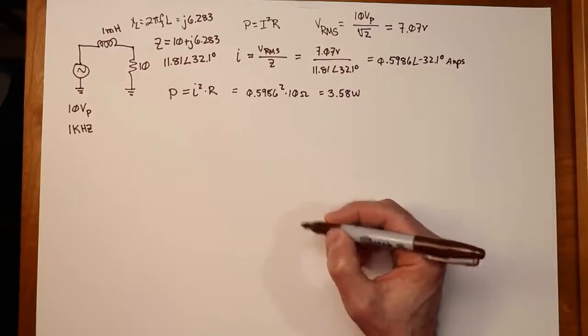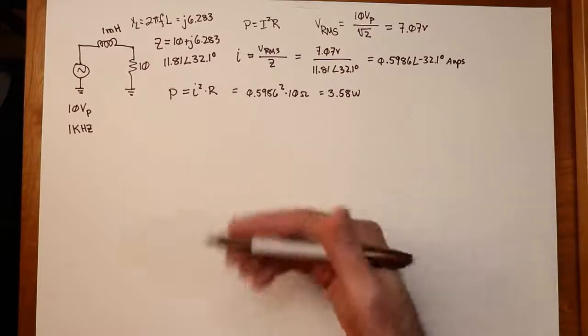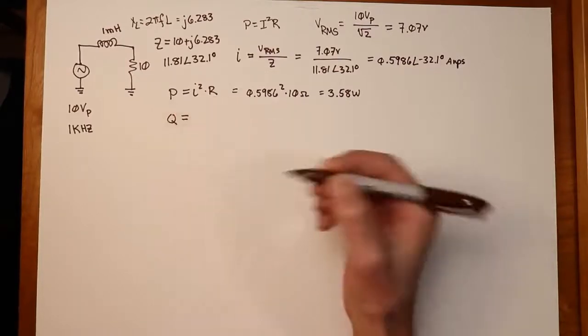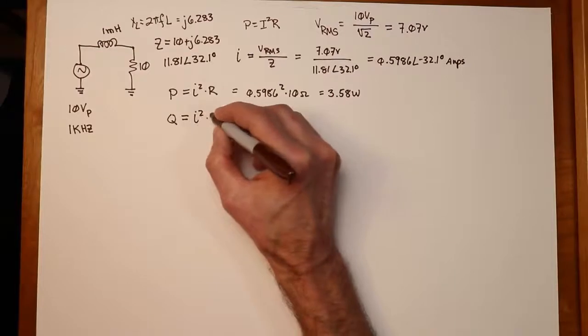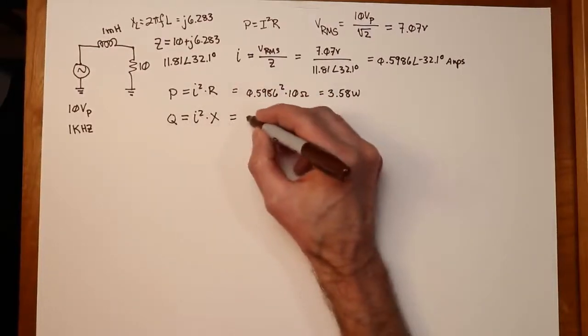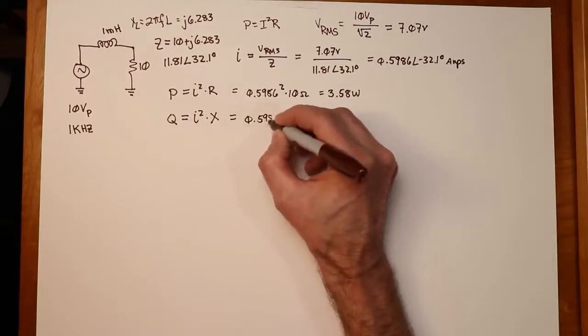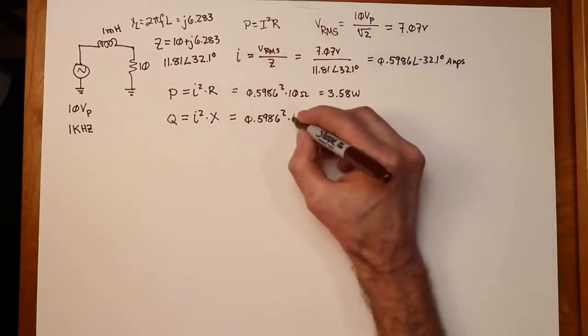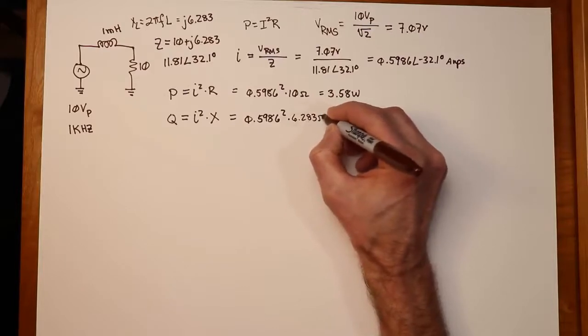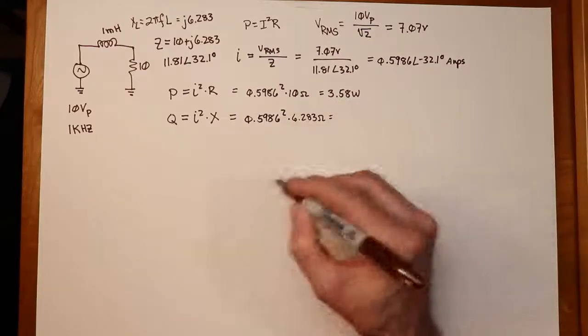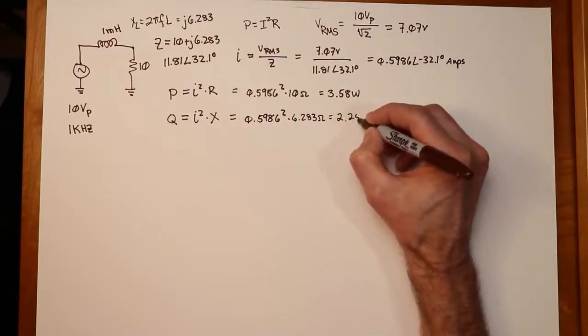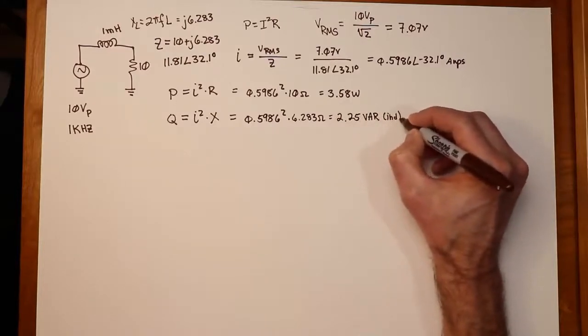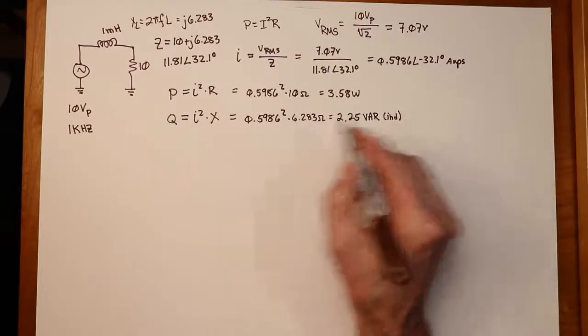Now we can repeat the process for the inductor. Remember, the inductor, we don't call that power. It's not true power, it's reactive power. We don't call it P. We use the symbol Q for that. But basically, it's just I squared times X, rather than I squared times R. But it's still the same current. So I square that. Now multiply by the magnitude. Don't worry about the J. Just multiply by the magnitude, 6.283 ohms. And the result of this will be 2.25 VAR. And obviously, that's inductive. Volt amp reactive. Remember, it's not watts. These are two different things.